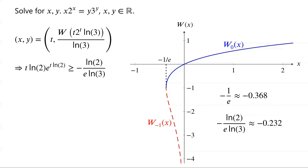Since −ln(2) / (e times ln(3)) is approximately −0.232, which is greater than −1/e, it is in the domain of the Lambert W function. Since the argument is less than 0 but greater than or equal to −1/e, the Lambert W function has two real values: W0 and W(−1). From the graph, the dashed green line representing x = −ln(2) / (e times ln(3)) intersects the Lambert W function at two points — one on the W0 branch and the other on the W(−1) branch.